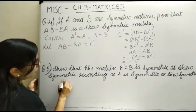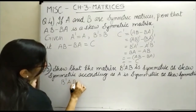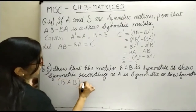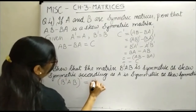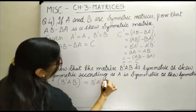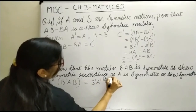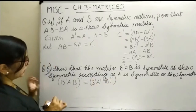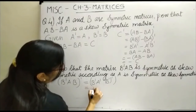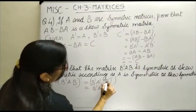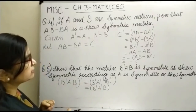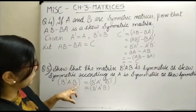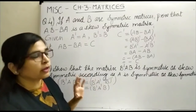Let us take the transpose of B transpose A B. When you take the transpose, the order changes. This becomes B transpose A transpose and (B transpose) transpose. You know that (B transpose) transpose equals B, so the transpose of B transpose A B is B transpose A transpose B, because the transpose of the transpose is the matrix itself.